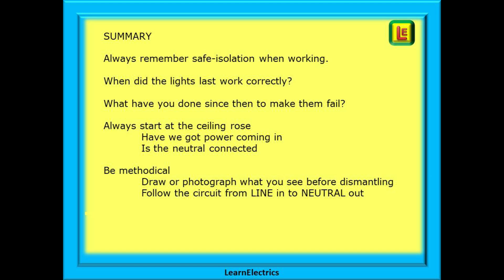And there we have a few faults for you to consider and understand. Always remember safe isolation when working. Ask the customer: when did the lights last work correctly, and what have you done since then to make them fail? Always start at the ceiling rose — have we got power coming into the room? Is the neutral connected? Does it return to the consumer unit? Without a complete circuit, nothing is going to happen. Be methodical in your inspection and testing. Draw or photograph what you see before dismantling — at least then you can get back to where you started. Follow the circuit from where the line comes in, through the switches and lamp, back to the ceiling rose, and then through the neutral and out of the circuit.